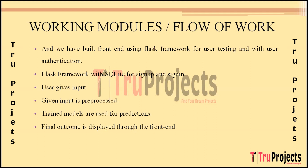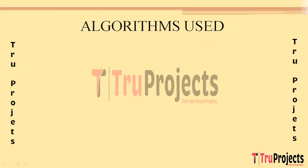The first algorithm used is the Support Vector Classifier (SVC), a supervised learning algorithm chosen for its effectiveness in classification tasks. SVC works by identifying a hyperplane that optimally separates different classes in the feature space. In the context of URL analysis, SVC aims to create a decision boundary distinguishing between phishing and legitimate URLs. It excels in capturing non-linear relationships within high-dimensional feature spaces, and by identifying critical support vectors, SVC ensures a robust classification model.